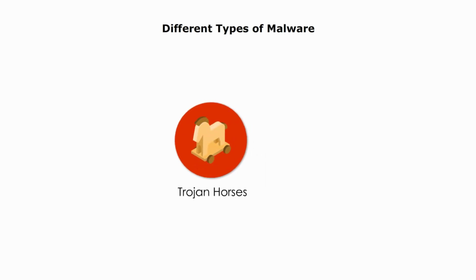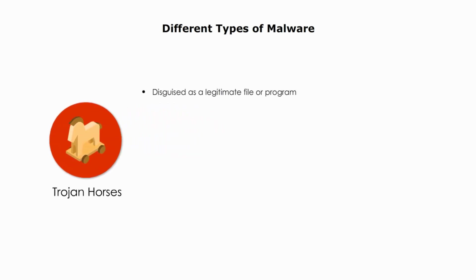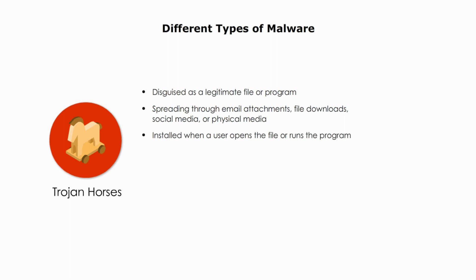Trojan horse. A trojan horse is a type of malware that is disguised as a legitimate file or program. Trojan horses are often spread through email attachments, file downloads, or social media. They can also be installed on a computer through physical media such as USB drives. When a user opens a file or runs a program, the trojan horse is installed on their computer.